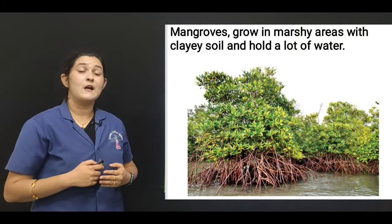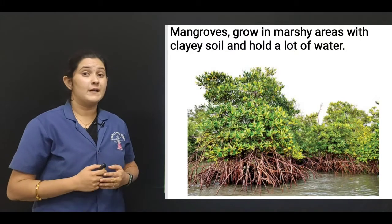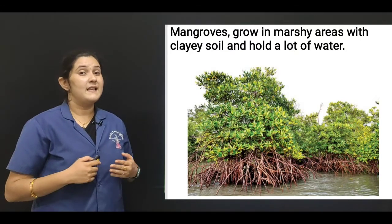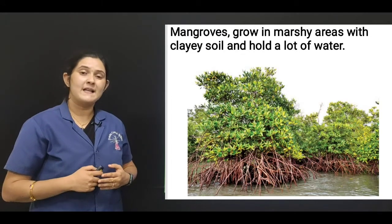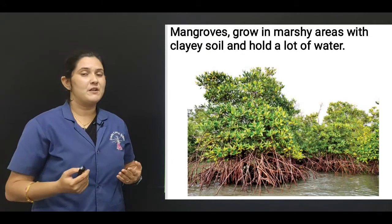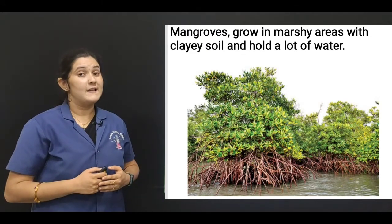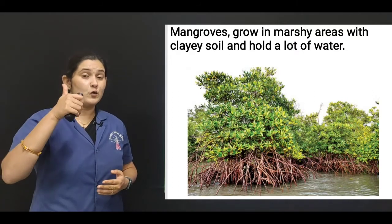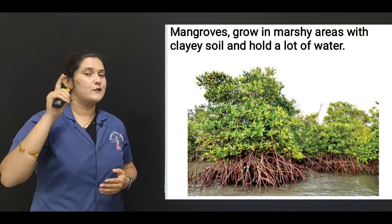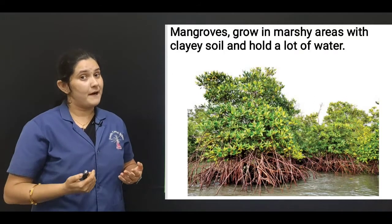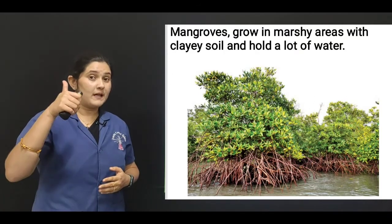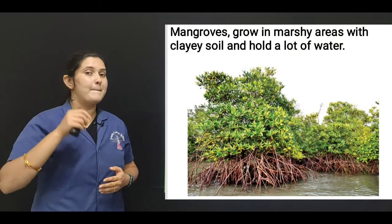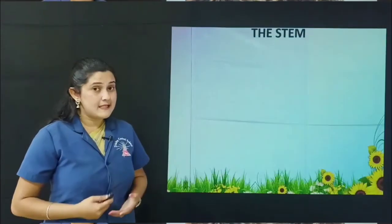In today's class you have learnt about special types of roots. They are special tap roots and special fibrous roots. Special tap roots are water storing roots and food storing roots. Special fibrous roots are propagative roots, aerial roots, and buttress roots.